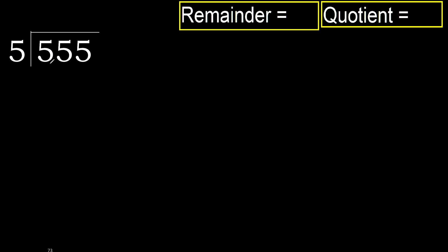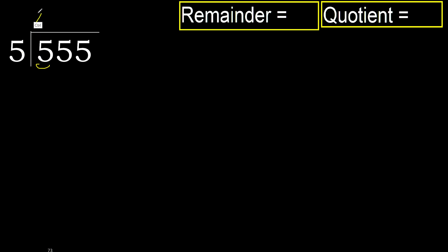555 divided by 5. 5 is not — let's go forward with 5. 5 multiplied by which number is nearest to 5, but not greater? 5 multiplied by 2 is 10 — 10 is greater. Multiplied by 1 is 5, which is not greater. OK.